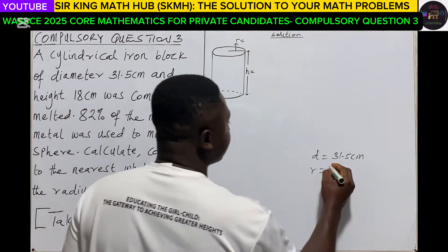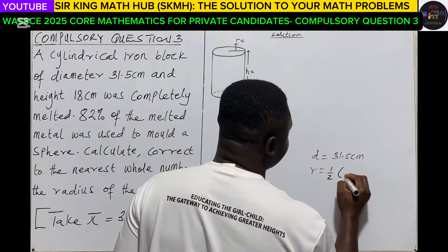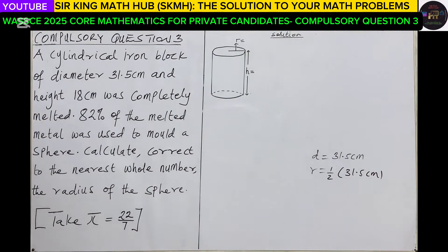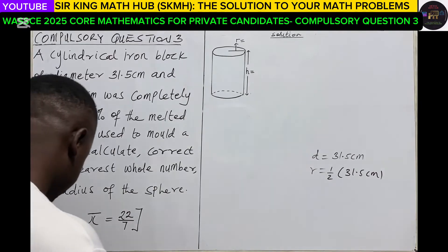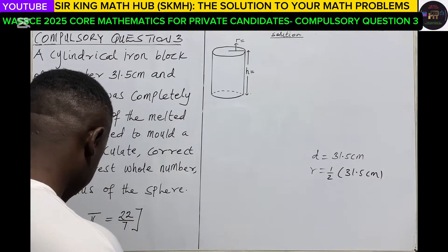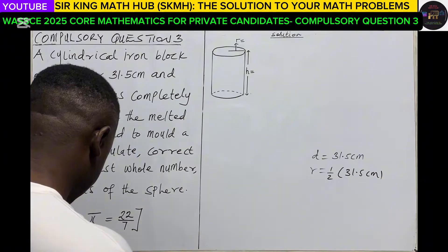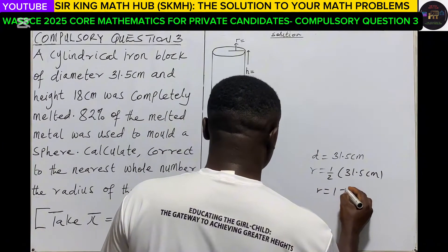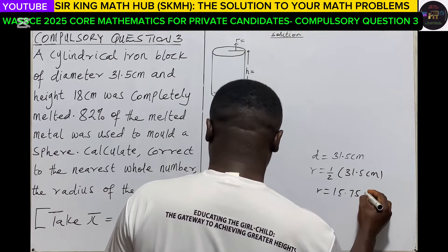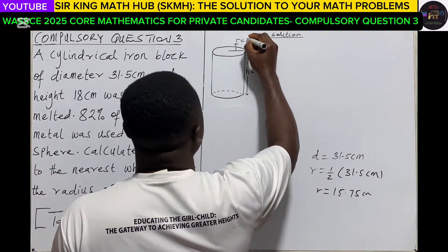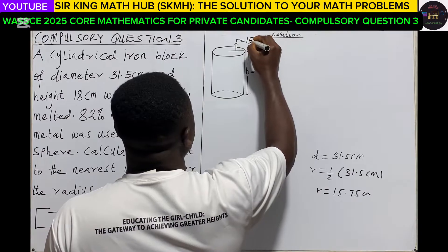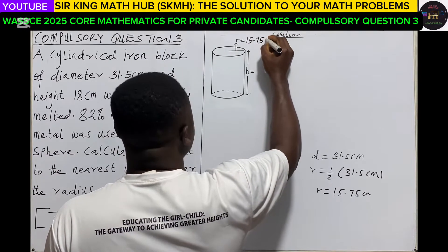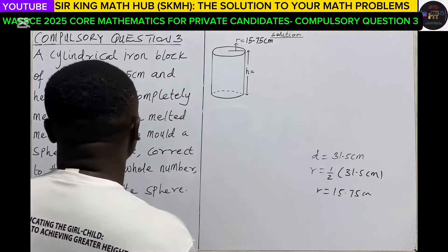So what is half of 31.5? We have 15.75 centimeters. So the radius is 15.75 centimeters.